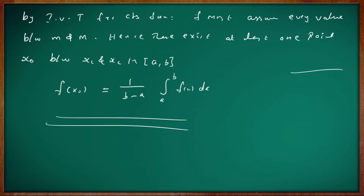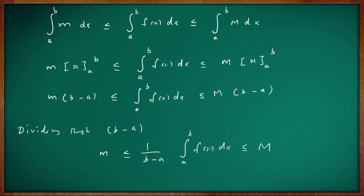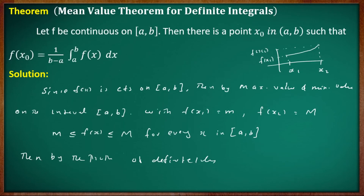The statement and proof are now complete. To summarize: we are talking about the mean value theorem, which involves the maximum value and minimum value on the interval.